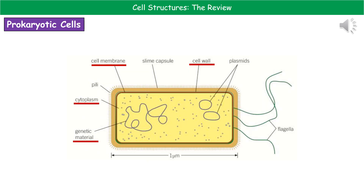The final type of cell we need to know about are the prokaryotic cells — the bacterial cells. This is a very different diagram to the others, as we've gone from eukaryotic cells to prokaryotic cells. There are four structures underlined in red that are present in all prokaryotic cells: they will all have genetic material, usually found as a big loop of DNA; they all have the cytoplasm, the cell membrane, and the cell wall.